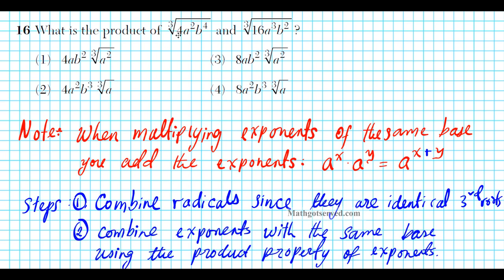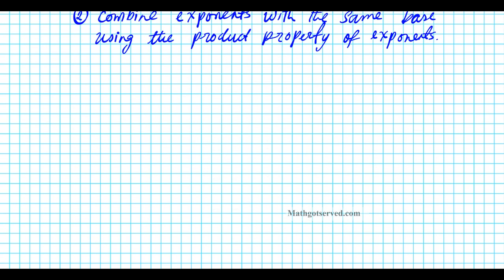First of all, we're going to combine these two radicals since they have the same root, which is three. Then we're going to combine terms with identical exponents. You can multiply constants since they have an exponent of zero. We're going to combine them using the product property of exponents. All right, so let's go ahead and get started.